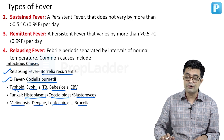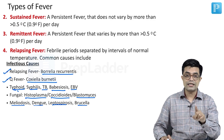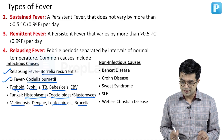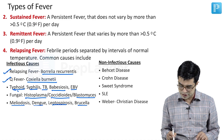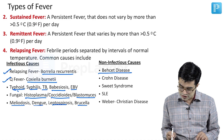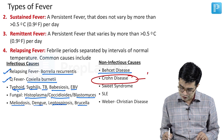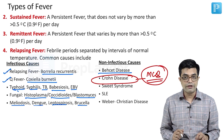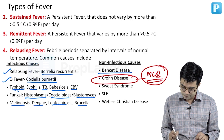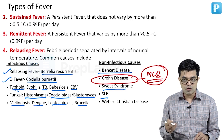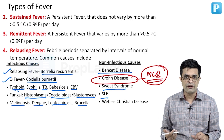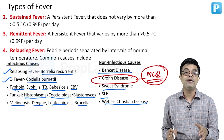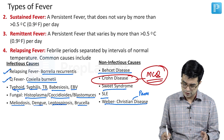Relapsing fever can also occur due to non-infectious causes. One of them was asked as a one-liner in the Fellowship National Board exam — Crohn's disease. Non-infectious causes include Behçet disease, Crohn's disease (starred — MCQ already asked in entrance exam), Sweet syndrome, SLE, and Weber-Christian disease which is a type of panniculitis. Sweet syndrome is a type of febrile neutrophilic dermatosis.